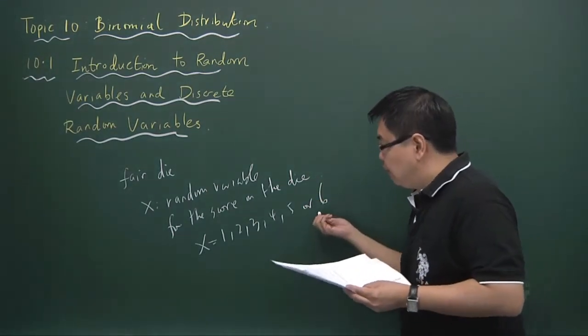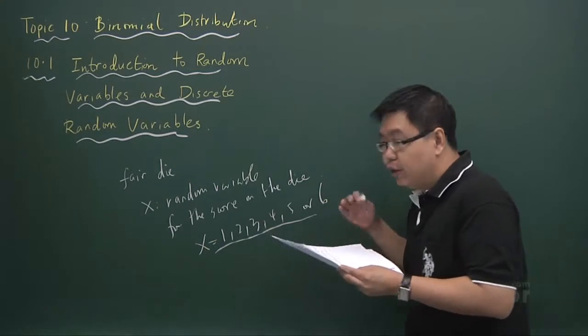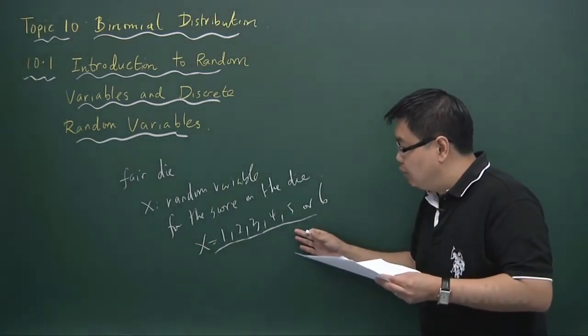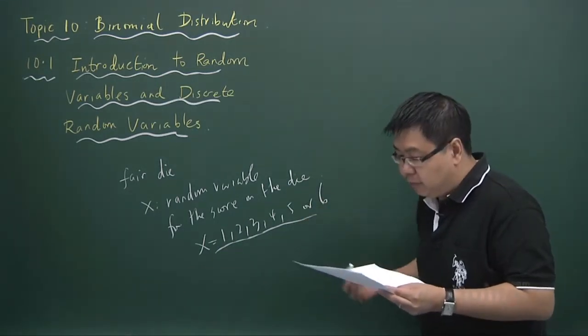So basically, a random variable takes number, numerical values, that's why it's called a numerical variant. And whose values depends on the outcome of the experiment.